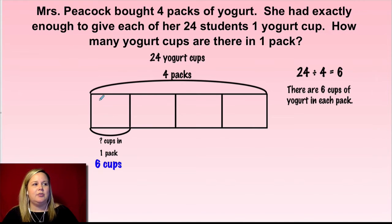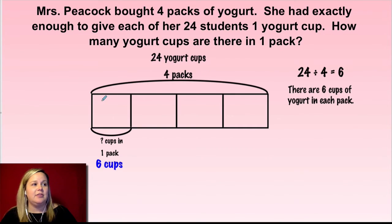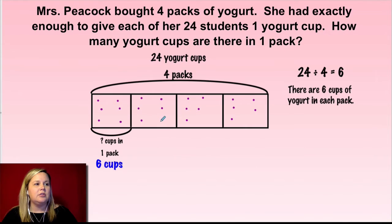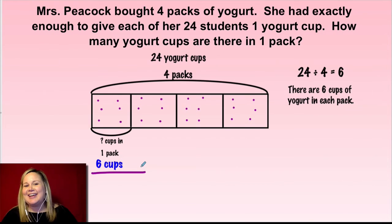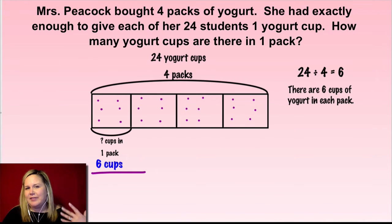When you're dividing into a known number of groups, you have to split those using the fair share method. So I counted 1 through 24, distributing one at a time into each of the four groups. That led me to believe there are six cups in each pack. So my division equation can be represented as 24 divided by 4 equals 6, and we use that to get our minds thinking about division.